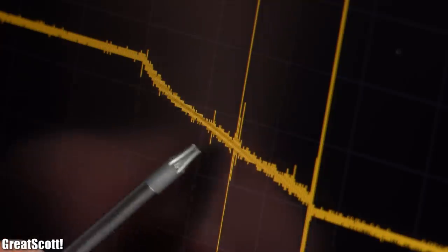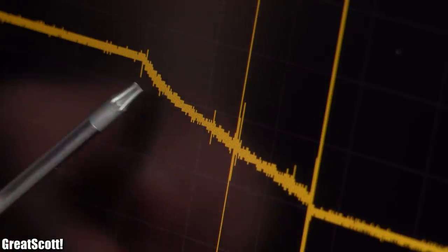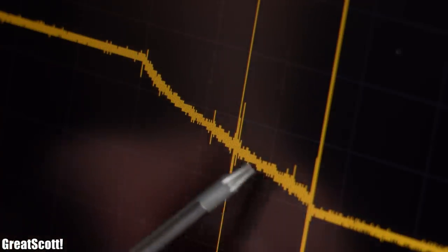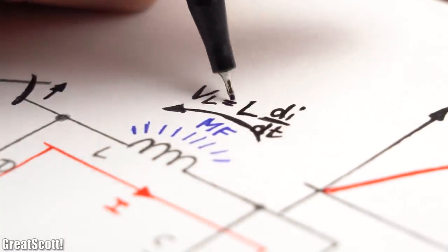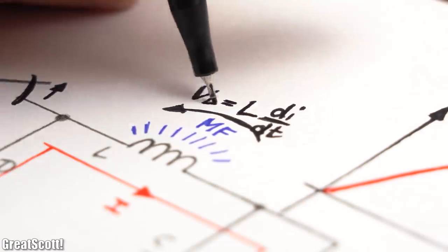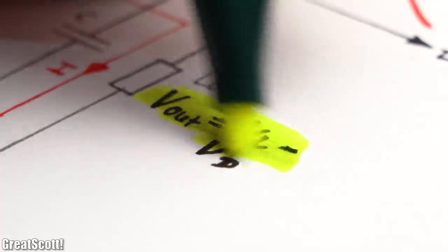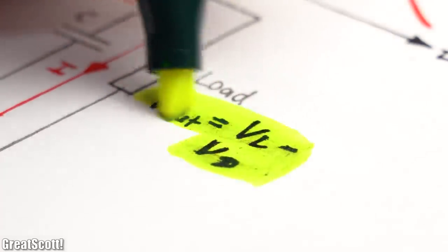Which once again leads to a relatively linear, this time decrease of the current value. Because of this current we got a voltage across the coil with reverse polarity in comparison to before, which reduced by the diode voltage equals the output voltage.